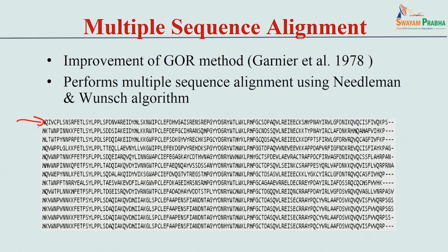Now you have several sequences and you can see the multiple sequence alignment. If you look into the sequences, some positions are conserved - the same residue at the same position. For example, take the first residue: it is highly conserved. In some cases it is variable - P is conserved here, Y is conserved there, and some positions show variability, changing with several residues like I, K, V.